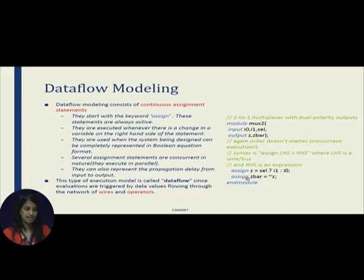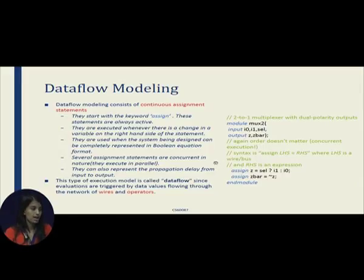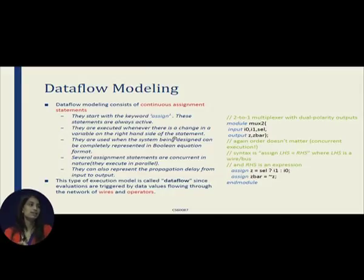The different assign statements inside a data flow model are executed in parallel and they can represent propagation delays — for example, z_bar can come after a 5-time-unit delay of z. Data flow modeling describes how data values flow through the network through wires and operators. It is described using continuous assignment statements that tell us how output changes with respect to input, and it uses operators.